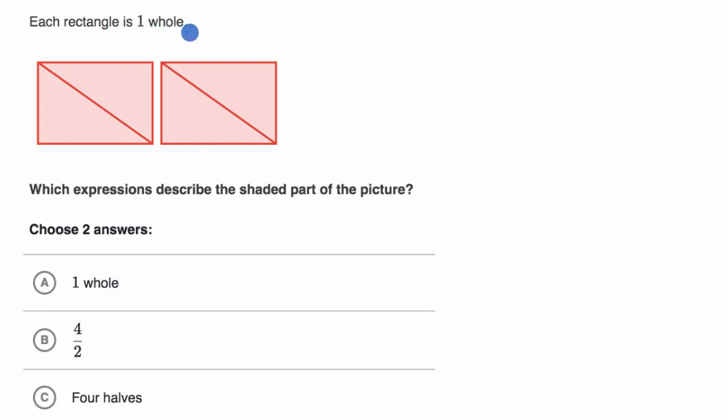We're told that each rectangle is a whole. So this is a whole right over there. That's one whole. And so this is two wholes.